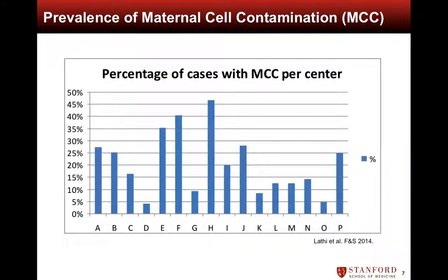This figure demonstrates the percentage of cases with MCC across fertility centers in the United States. Some centers have less than 5 percent MCC rates, while others had MCC in nearly half their specimens. We postulate that the high variability of MCC rates across fertility centers can be attributed to differences in the technique utilized for separating villi from maternal cells.